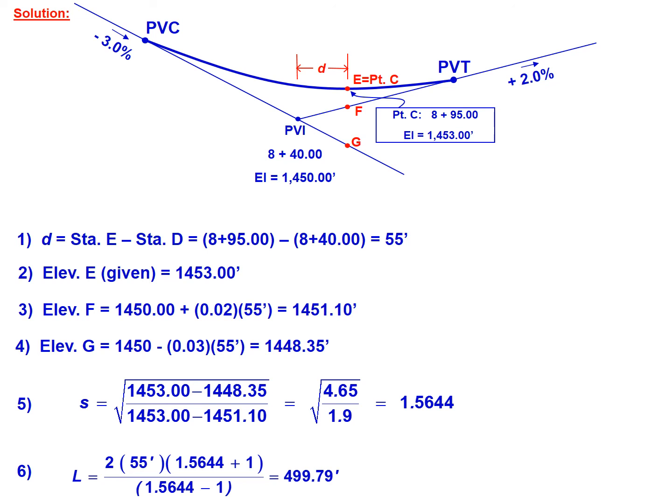So what this means is that for the given parameters, we've got an entrance grade of negative 3, exit grade of positive 2, and a curve length of 499.79 feet will fit through point E. And again, point E has the parameters of being 55 feet past the PVI and at an elevation of 1453.